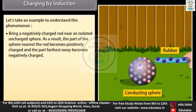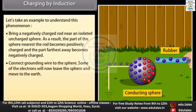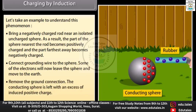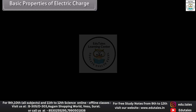The part of the sphere farthest away becomes negatively charged. Connect a grounding wire to the sphere — some of the electrons will now leave the sphere and move to the earth. Remove the ground connection — the conducting sphere is left with an excess of induced positive charge.